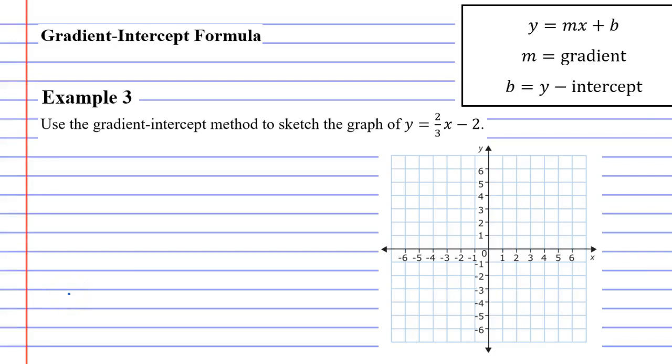Example 3, use the gradient intercept method this time to sketch the graph of y equals 2 thirds x minus 2.